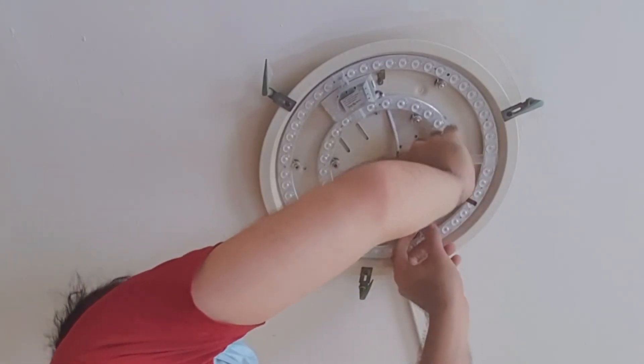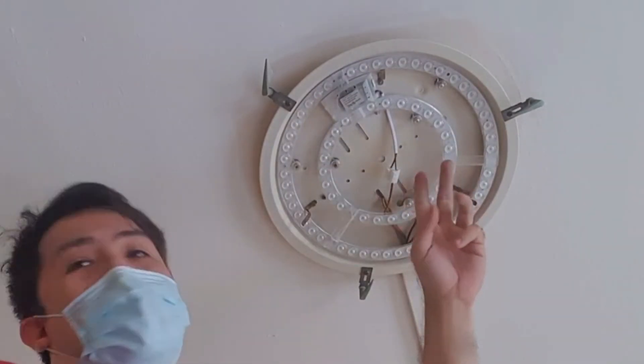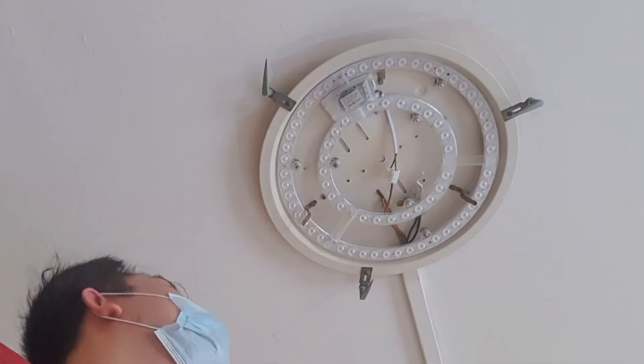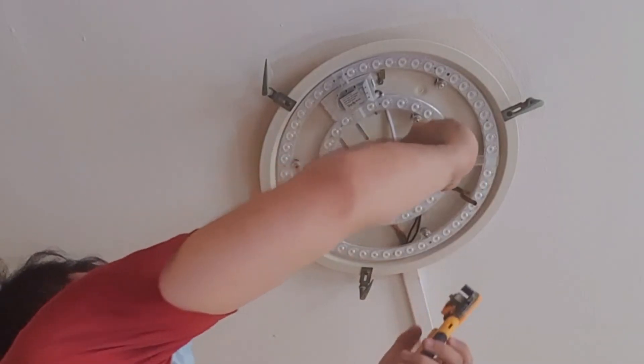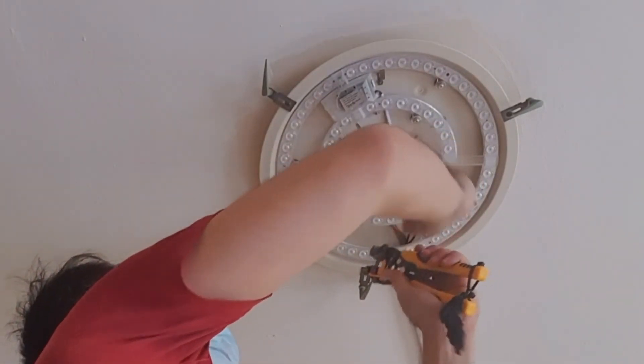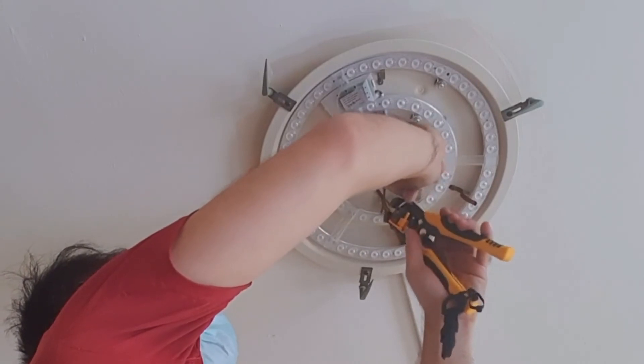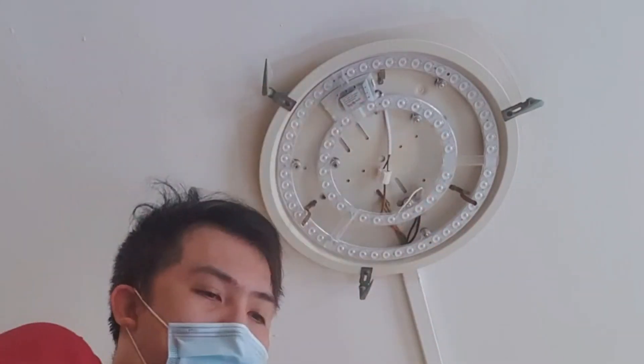And, here I've got the neutral. Now, I cut this off just now. So, what I'm just going to do is I'm going to strip it because the two neutral wires do join to this white one. And, I'm going to strip this white wire. Just like that.